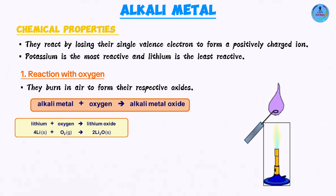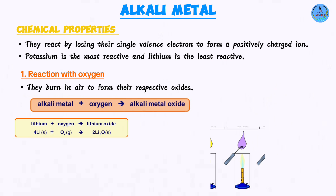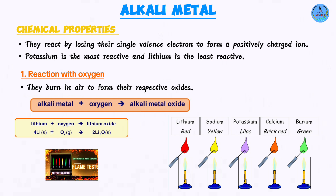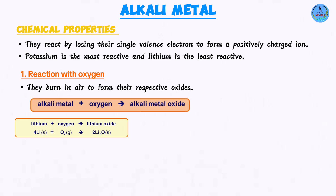Potassium burns in oxygen to form potassium oxide, and it burns with a characteristic lilac flame. Each metal has a characteristic color when burned in a non-luminous flame — lithium is red, potassium is lilac, and sodium produces a golden yellow flame. This is called the flame test, which can be used to investigate the presence of certain metal ions.